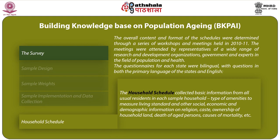The questionnaires for each state were bilingual, with questions in both the primary language of the state and English. The household schedule collected basic information from all usual residents in each sample household, including type of amenities to measure living standard, and other social, economic and demographic information on religion, caste, ownership of household land, death of aged persons, causes of mortality and others.